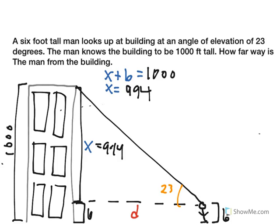And so we know that tangent equals opposite over adjacent. And so the tangent of 23 degrees is going to equal X over the distance.